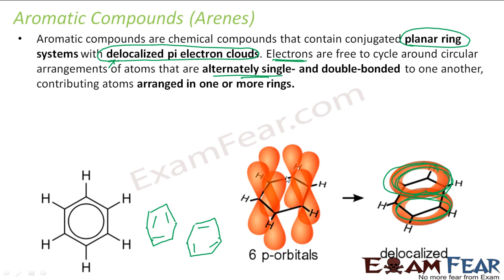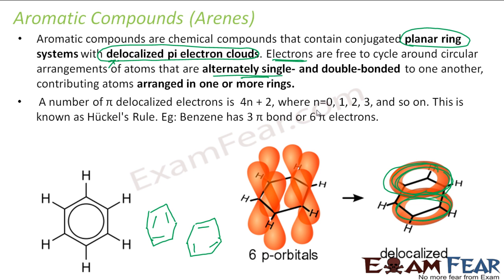Aromatic compounds also have a good smell. According to Hückel's rule, they have 4n+2 pi electrons. In the case of benzene, n equals 1, so you get 4(1)+2 = 6 pi electrons.